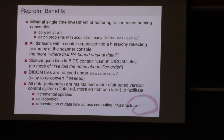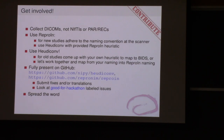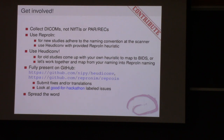ReproIn and HeuDiConv are available in NeuroDebian. First advice: collect the DICOMs, not PAR/REC and NIfTIs. With our previous Philips scanner, people collected NIfTIs and then lost all precious metadata because the DICOMs were gone. Use ReproIn for new studies, or establish similar heuristics for data you've already collected for HeuDiConv. Or we could work together to establish a mapping from your naming convention into ReproIn and convert it together. Everything is on GitHub — you're welcome to contribute.